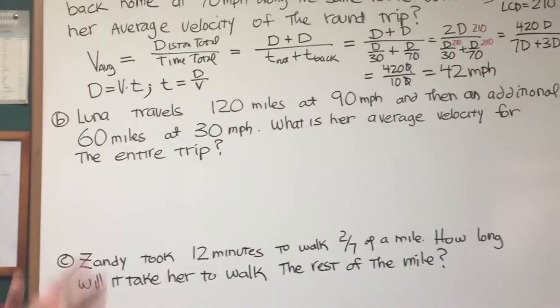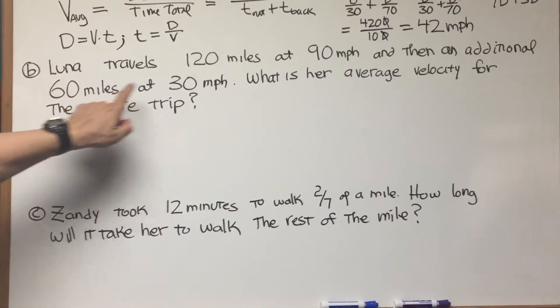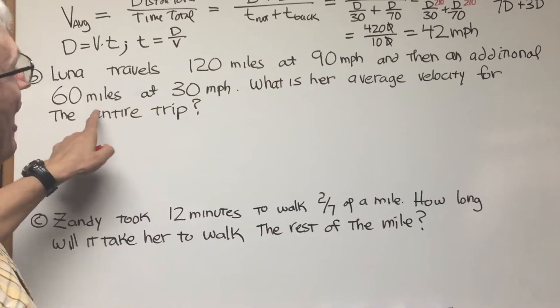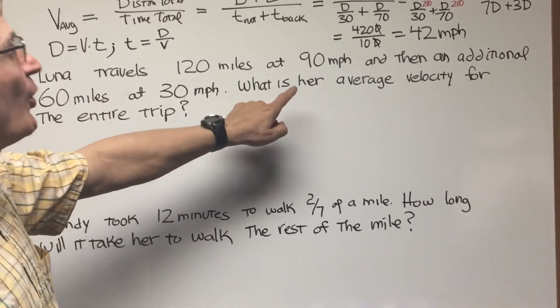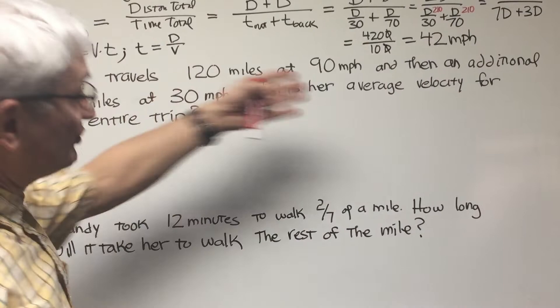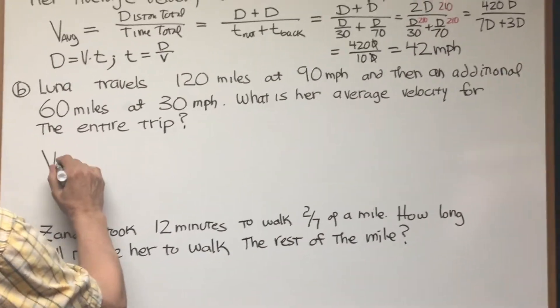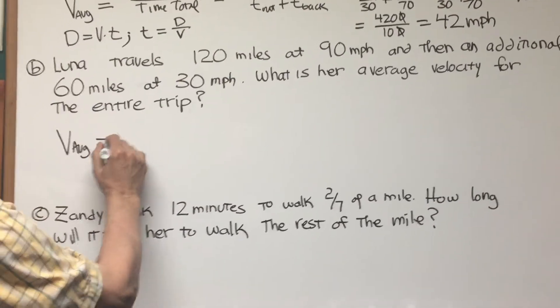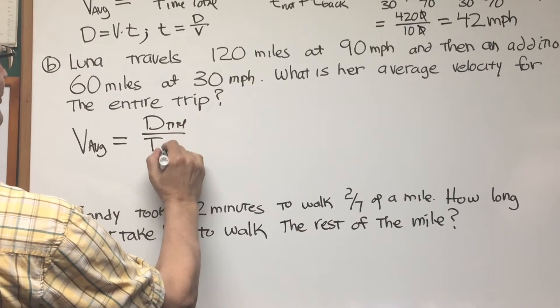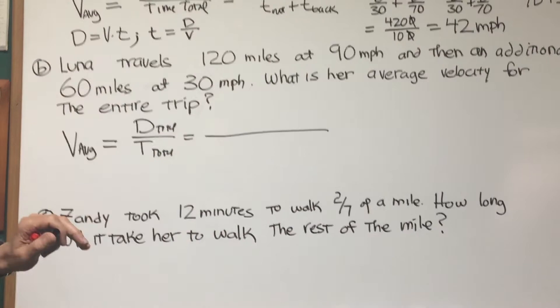All right, let's go to the second problem. Same thing, average velocity. Let's read it together. Luna travels 120 miles at 90 miles an hour, and then an additional 60 miles at 30 miles an hour. What is her average velocity for the entire trip? Well here, she's traveling different distances at different velocities, same thing. The average velocity is going to be distance total over time total.